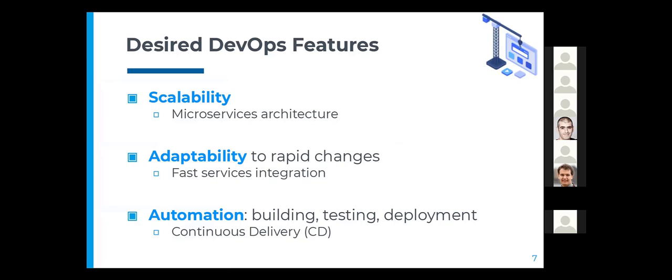For this purpose, a good DevOps infrastructure would need to have the following features. First, it needs to be scalable. This is achieved using a microservices architecture where different functionalities are separated into their own services and exposed through APIs. Second, the infrastructure must be capable of adapting to fast changes in the market, meaning being able to rapidly integrate new services. Finally, a good DevOps environment needs to have automated tasks such as building, testing and deployment of applications.